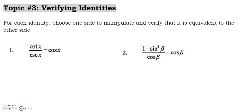Alright, so in our last video we talked about building some skills to help us lead into verifying identities. So you've practiced simplifying some expressions and reviewed your algebra skills, and today we're going to put those things together and see if we can prove that these statements are true. Verifying identities is a proof of sorts, but it's not like proofs you may have seen in geometry class. It's more about showing that one side is equal to another using algebraic skills and trig substitutions.